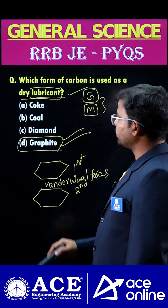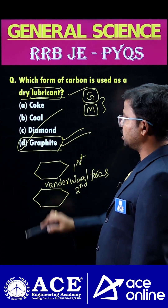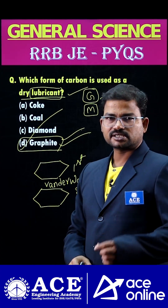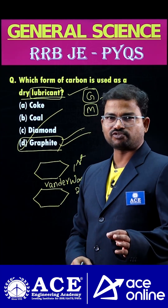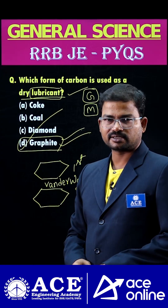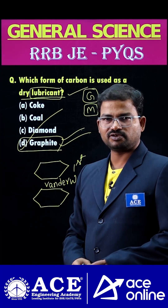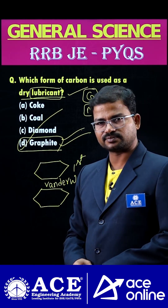So finally, the correct answer is option D — graphite. Now, which is treated as the purest form of carbon? If you know the answer, please comment. Thank you.